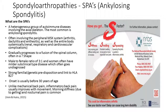Now moving on to spondyloarthropathy specifically — arthropathies that do affect the axial spine. Ankylosing spondylitis is probably the most common presentation. The spondyloarthropathies are a heterogeneous group of autoimmune diseases involving the axial skeleton. It's important for podiatrists to have awareness of this because there are peripheral manifestations of this disease.